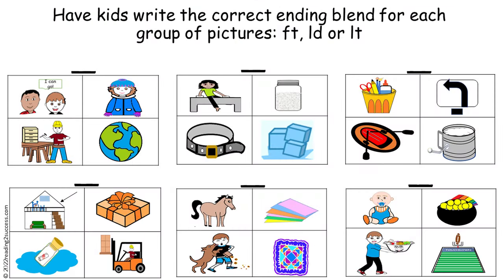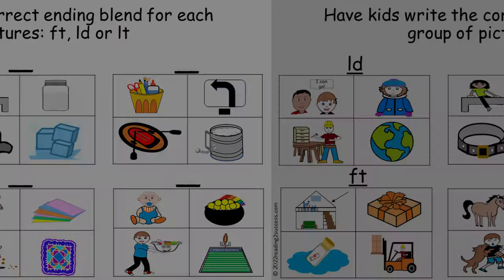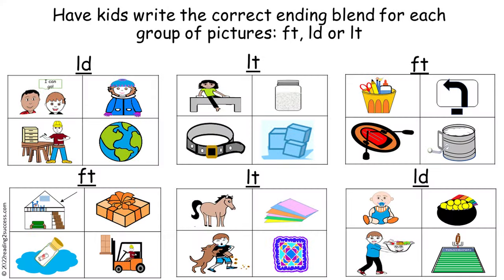Now have kids write the correct ending blend for each group of pictures: FT, LD, or LT. This is the completed example. If kids had some difficulty, have them go back and review the charts.